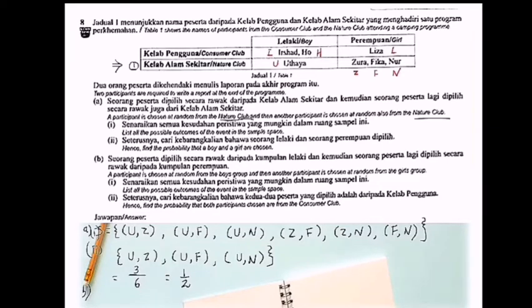A participant is chosen at random from the boys group, and then another participant chosen at random from the girls group. So list all the possible outcomes of the event in the sample space. So now it's different already, not according to the club, but according to the boys group and girls group. We choose from the boys group, after that we choose from the girls group.